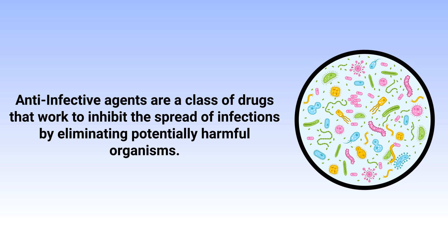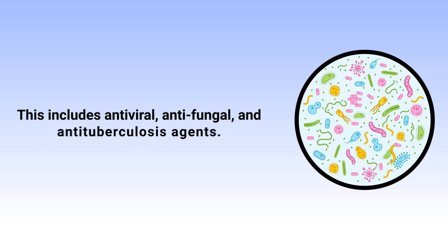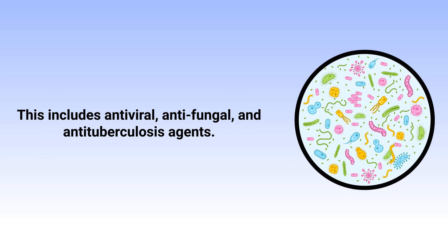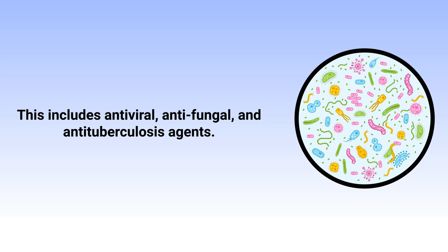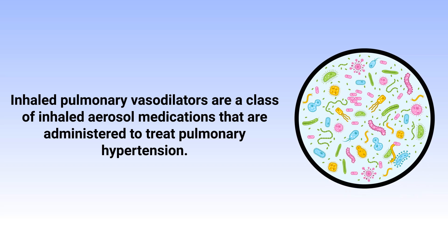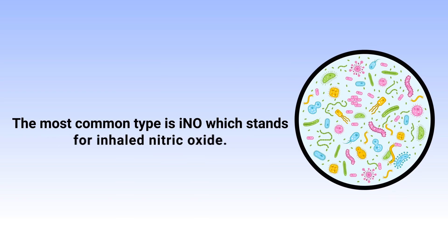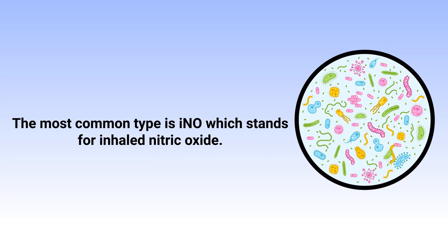Anti-infective agents are a class of drugs that work to inhibit the spread of infections by eliminating potentially harmful organisms. This includes antiviral, antifungal, and anti-tuberculosis agents. Last but not least, inhaled pulmonary vasodilators are a class of inhaled aerosol medications that are administered to treat pulmonary hypertension. The most common type is iNO, which stands for inhaled nitric oxide.